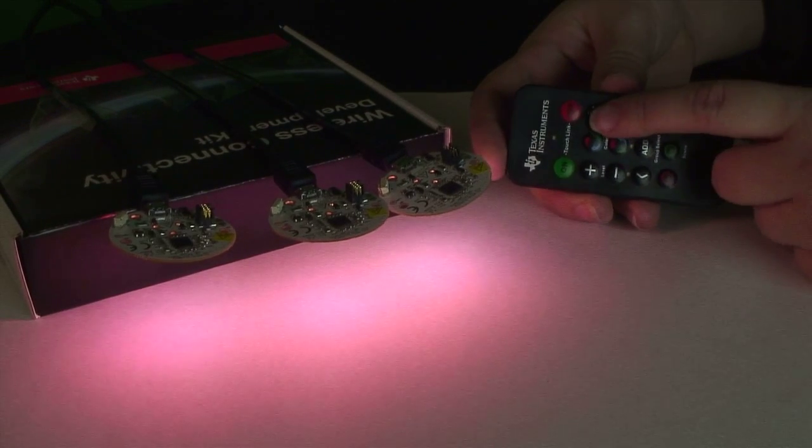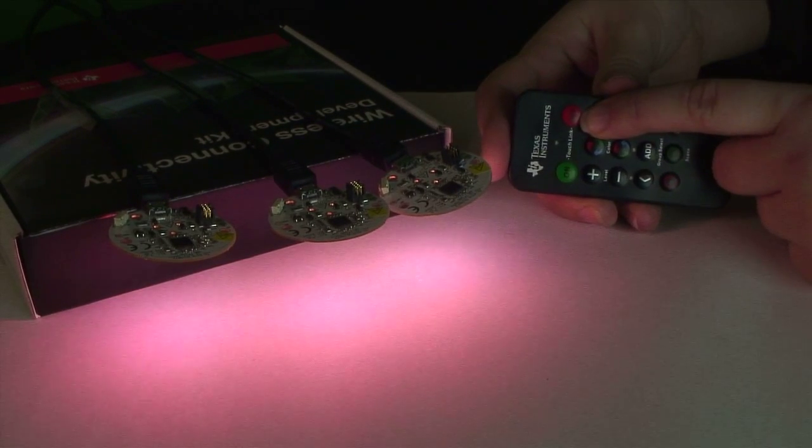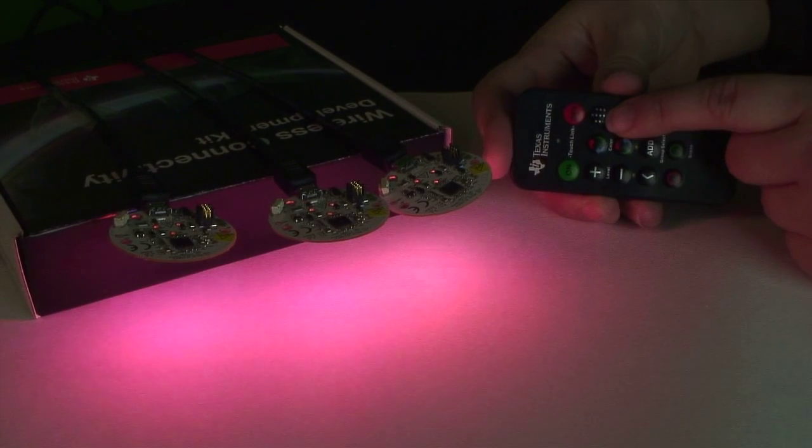And then last is saturation. If you want it to be highly saturated you press the top and it will get darker and darker. Or if you want to add more white into it you press the bottom one and it lightens it up.